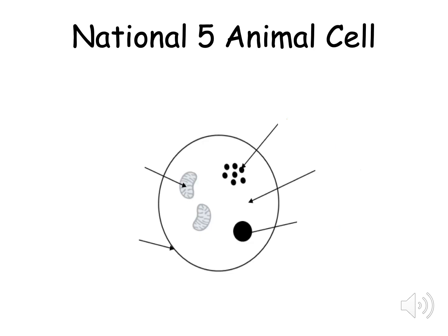In National 5 Biology you are required to know five structures. Structures can sometimes be called organelles as well. As well as knowing the structure's names you also need to know each of their specific functions. Three of these you have already heard of before: the nucleus, the cell membrane and the cytoplasm.